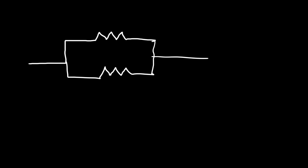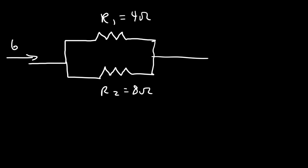Let's say we have the following circuit with two resistors in parallel. We'll call them R1 and R2, where R1 is 4 ohms and R2 is 8 ohms. The total current entering this part of the circuit is 6 amps. How can we calculate the current that flows through R1 and R2?